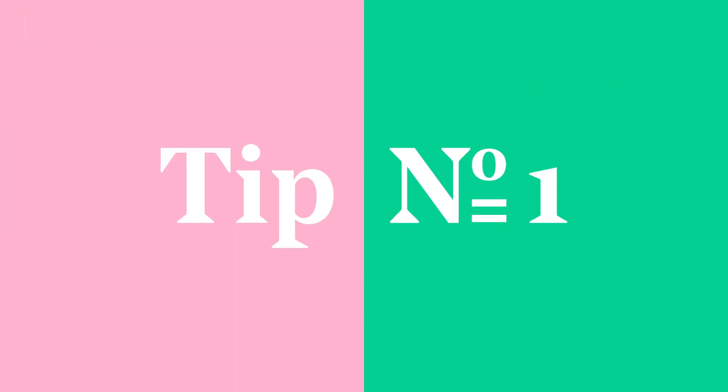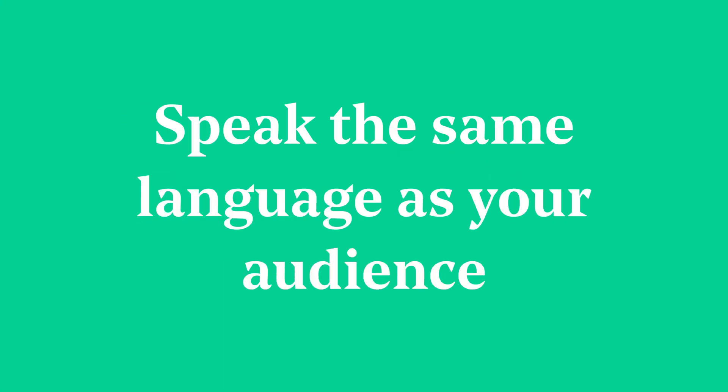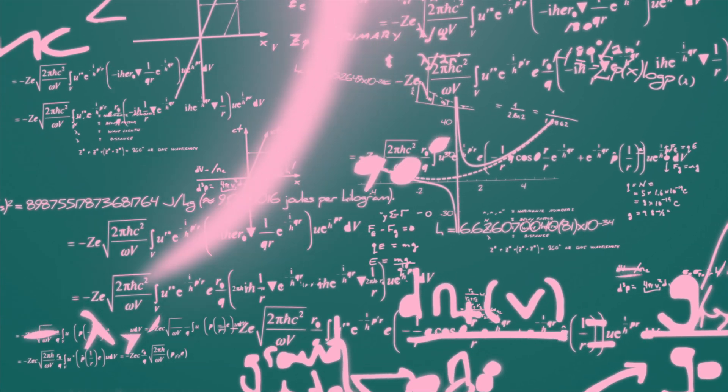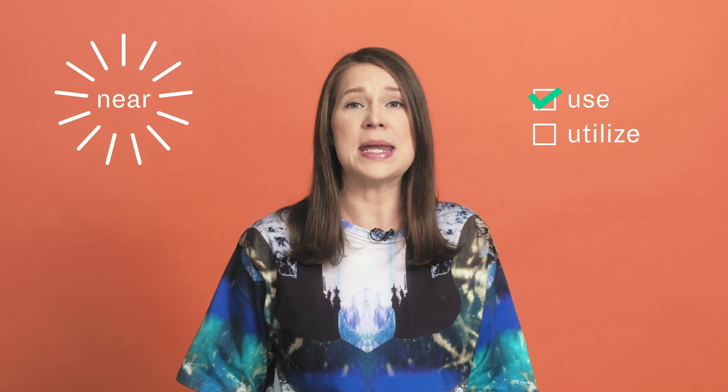Tip number one: speak the same language as your audience. Let go of scientific language. Speaking is different from writing a research paper. This means using simple words like 'use' instead of 'utilize', 'near' instead of 'close proximity', and 'help' instead of 'facilitate'.